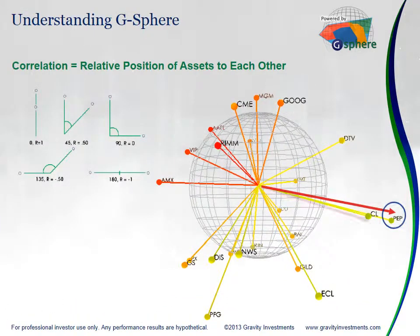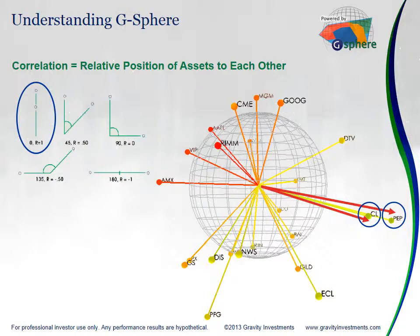At the same time, we can look at positive correlation. Two assets that are going the same direction, economically and geometrically, are going to have a stronger positive correlation. So when we have a correlation approaching positive one, meaning those assets are moving in lockstep to one another, we're going to have a very acute angle — an angle approaching zero — between those two assets.